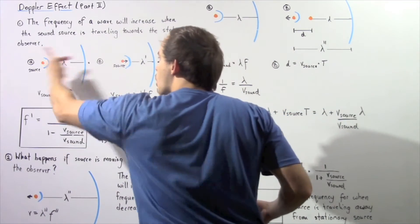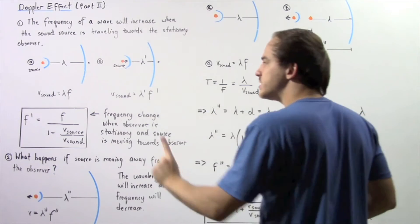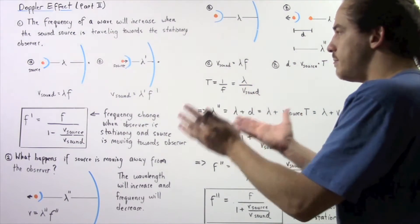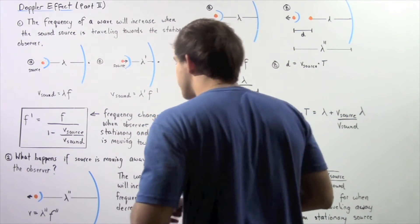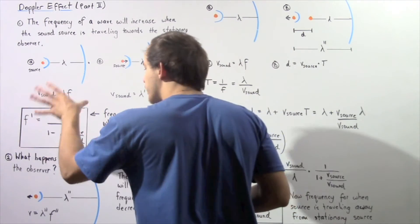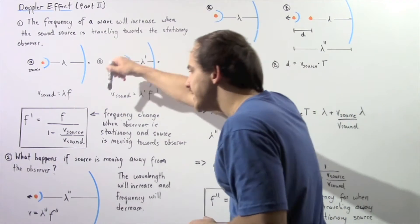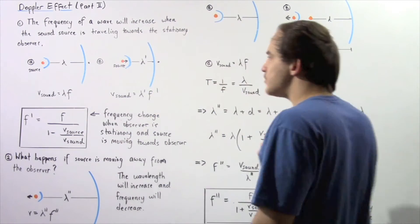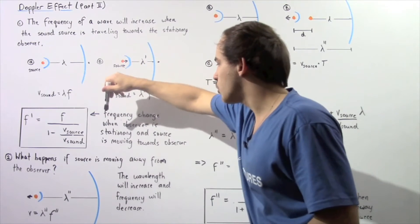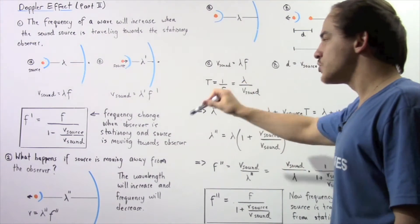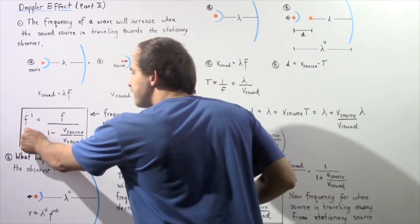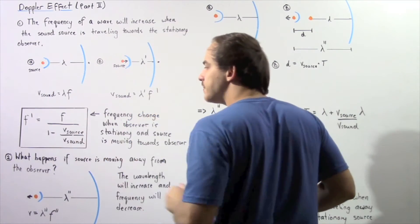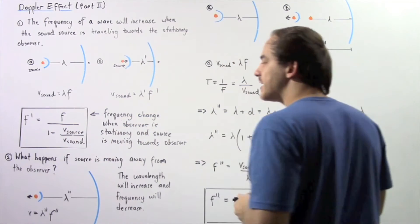So, if our sound source is moving towards our stationary observer, the frequency will increase, the wavelength will decrease, and the velocity of the sound wave will remain the same because the medium in both cases is exactly the same. We also derived the equation that gives us the frequency for when the sound source is moving towards the stationary observer: F prime equals F divided by (1 minus V source divided by V sound).